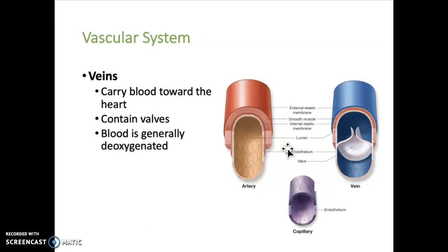Veins carry blood back toward the heart. Veins contain the same layers as arteries do. One unique thing about veins is that they contain valves, which are important to prevent the backflow of blood. In general, blood within veins is deoxygenated, meaning it has a low concentration of oxygen, and it appears a darker, really dark red or almost purplish color.